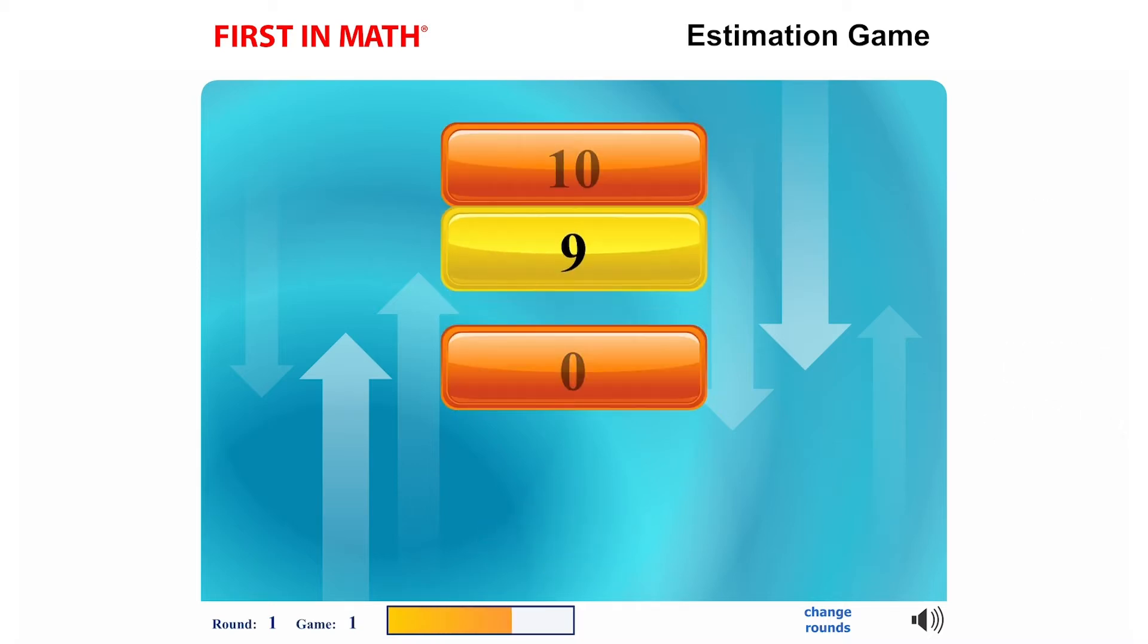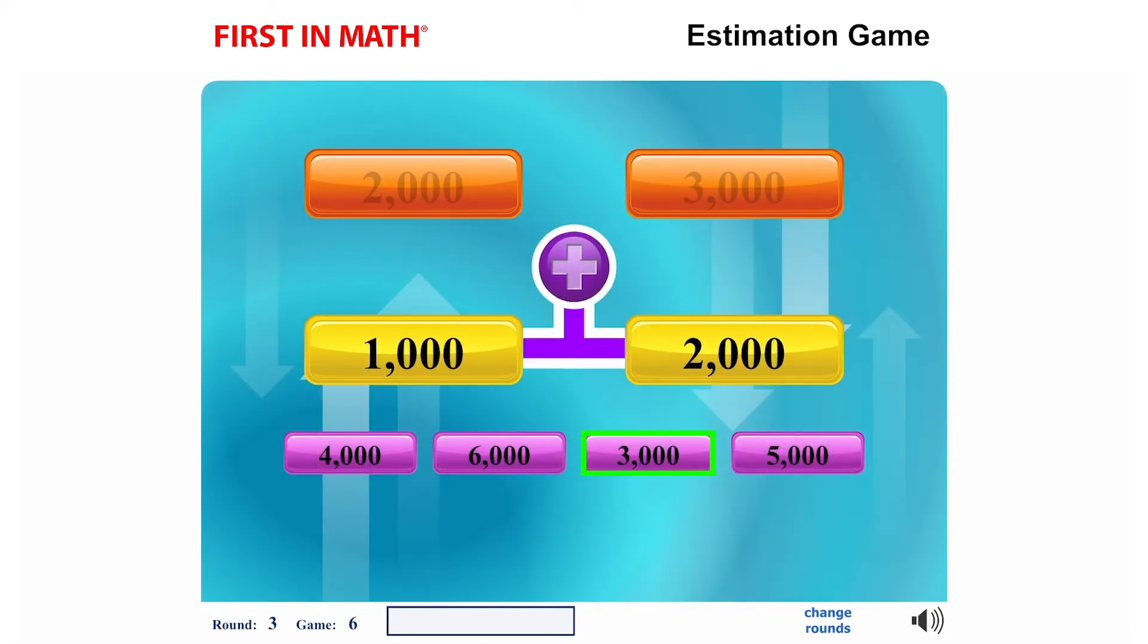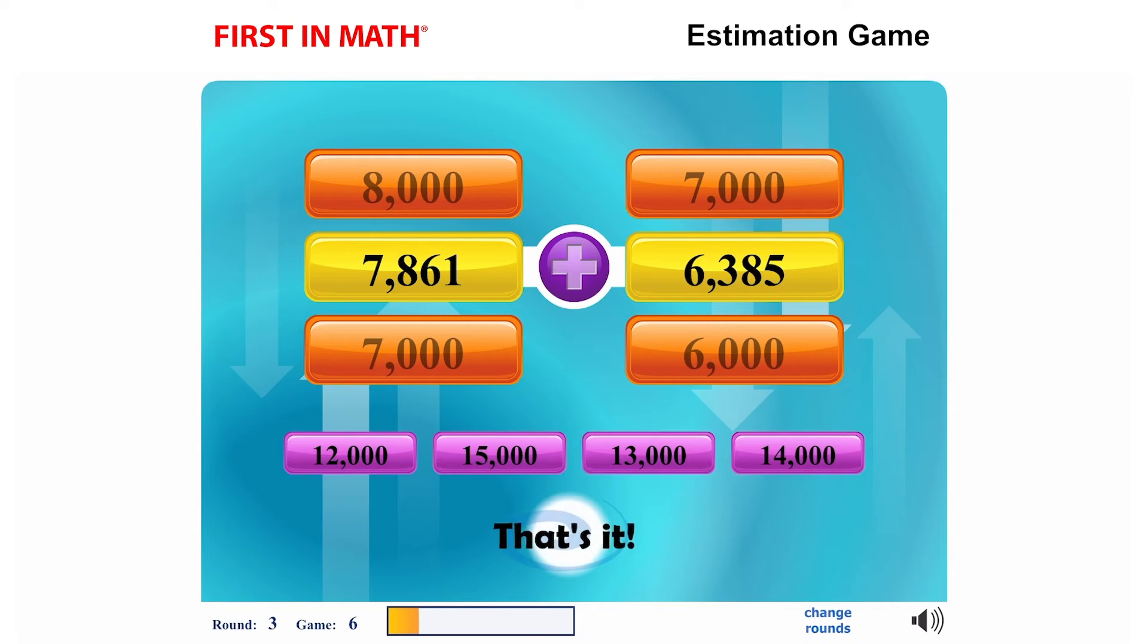As you advance within a round, you will need to add or subtract numbers after rounding them and then select the correct total.